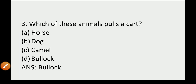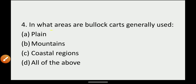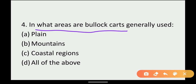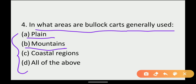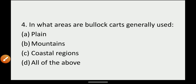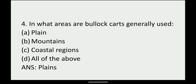Fourth: in what area are bullock carts generally used? Options: Plains, Mountains, Coastal regions, All of these. Plains is the land that is flat and equal. Mountains are high land. Coastal areas are where we find water. Bullock carts are generally used in plains, so your answer is plains.